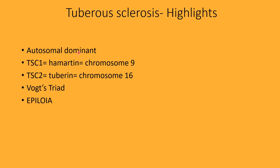Tuberous sclerosis is autosomal dominant with mutations in tumor suppressor genes — TSC1 and TSC2. TSC1 forms the protein hamartin, TSC2 forms tuberin. TSC1 is on chromosome 9, TSC2 is on chromosome 16 — remember three squared is nine and four squared is sixteen.